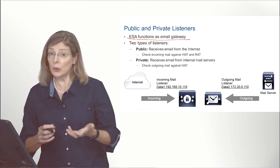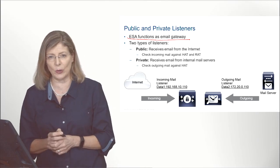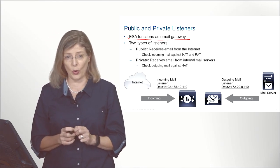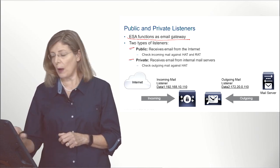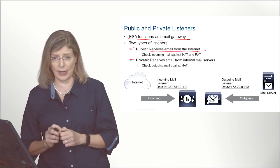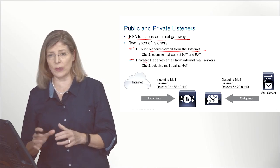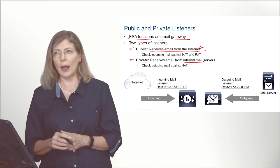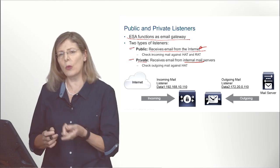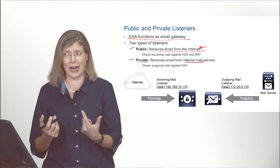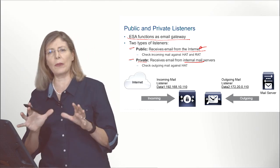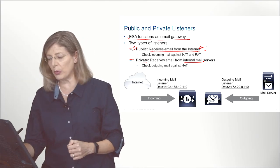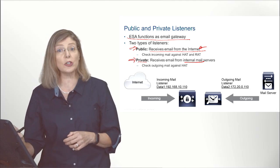The ESA functions as an email gateway, receiving incoming email typically on port TCP 25. There are two types of listeners: a public listener, which receives email arriving from the internet, and a private listener, which always receives messages arriving from your internal mail server. If you have two listeners — one pointing to the internet and one pointing to the inside network — the internet-facing one is the public listener and the Exchange-facing one is the private listener.